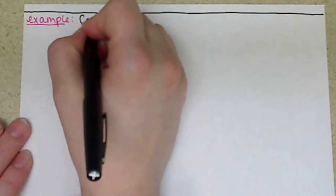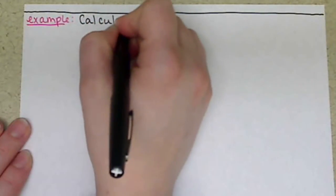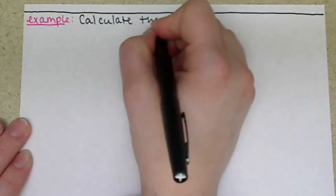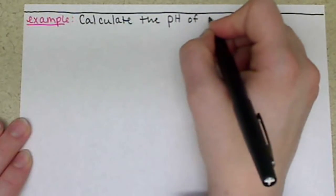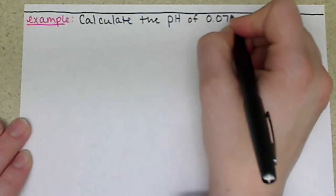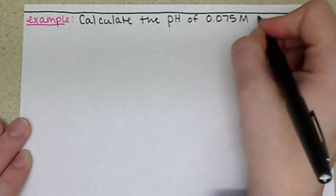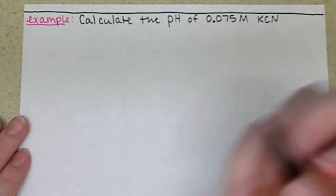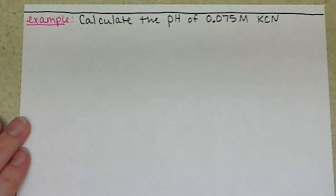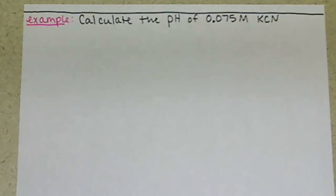We're going to work through an example of determining the pH of a salt solution. We want to calculate the pH of 0.075 molar KCN.